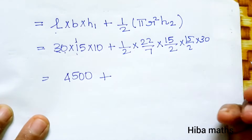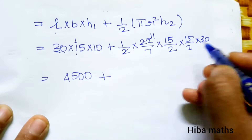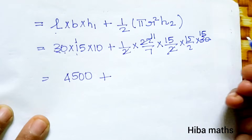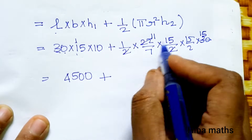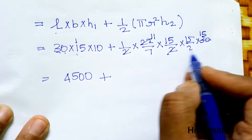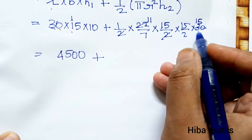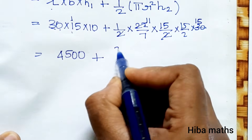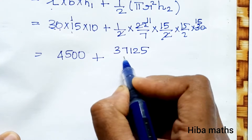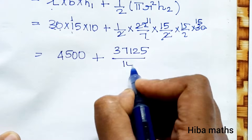Solving step by step: 2 × 22 = 44, then simplifying 30 and 2 gives 15. Computing 11 × 15 × 15 × 15 divided by 7 gives the cylinder part. After dividing, the result is approximately 2651.79 cm³ for the half cylinder part.